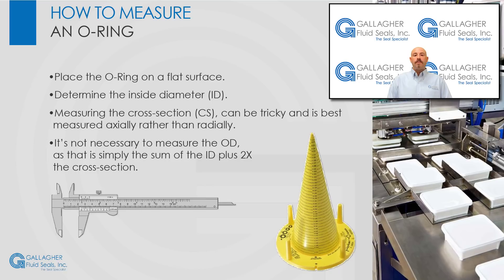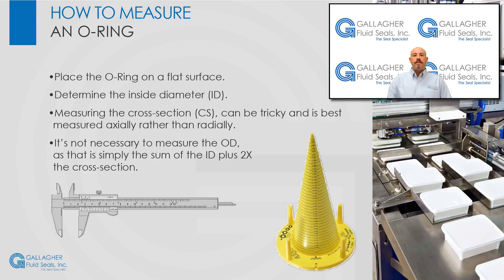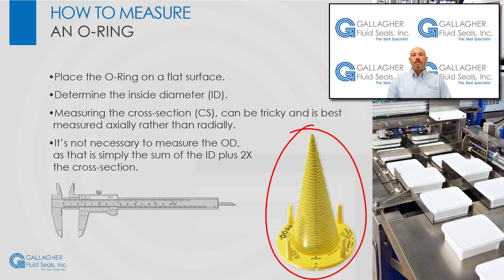The two critical dimensions for an O-ring are the inside diameter and the cross-section. To measure an O-ring, lay it flat on a surface, ensure the ring is circular, and measure the inside diameter. To measure the cross-section, a caliper is the best tool — measure in multiple places around the ring to ensure accuracy and consistency. You can see here a picture of an O-ring sizing tool, developed to make it easy to confirm the AS568 size of an O-ring by dropping it on a cone and reading the size it falls next to. Note that this cone will not work for very small or very large O-rings.